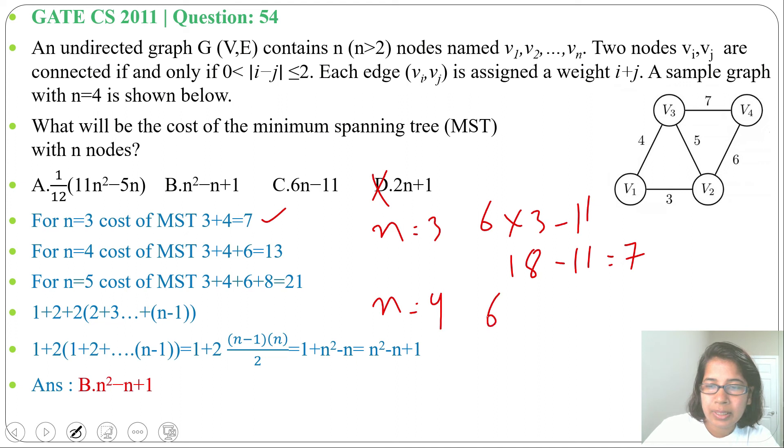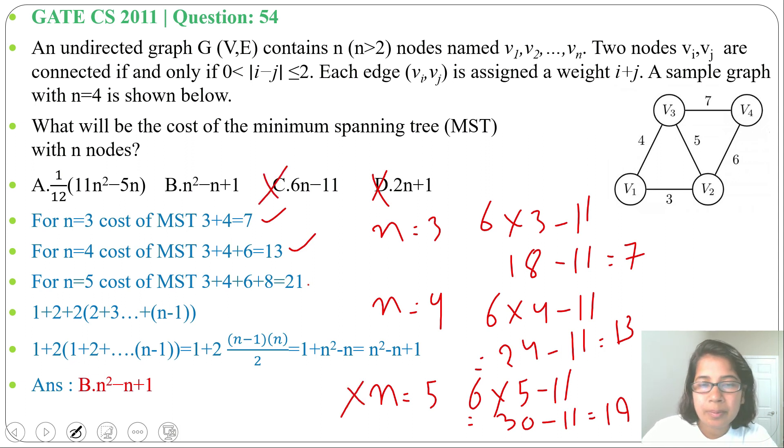Next n=4: 6×4-11=24-11=13. It satisfied. Then for n=5: 6×5-11=30-11=19. For n=5 it doesn't satisfy. So option C is wrong. This process is time consuming as for multiple n we need to check and there are 4 options. For every option we will try multiple n. So it will take more time. Better way: try to find a pattern and generalize it for n.